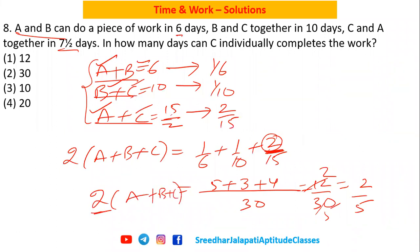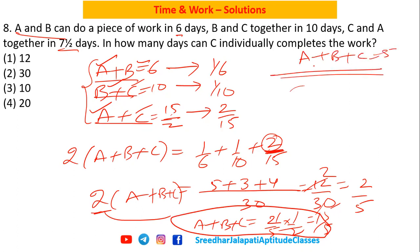So if I bring this two to the right hand side, it becomes ABC one day work is 2/5 times 1/2, that is 1/5. So ABC together, one day work is 1/5, that means all together they take five days.